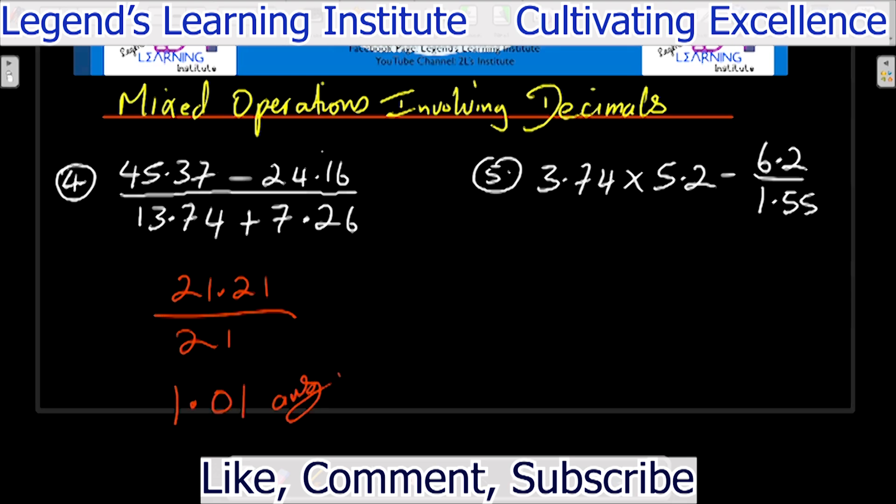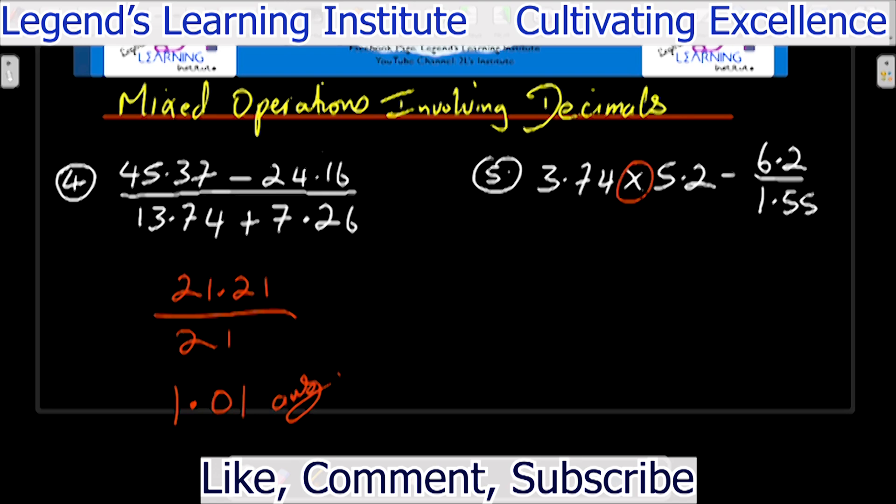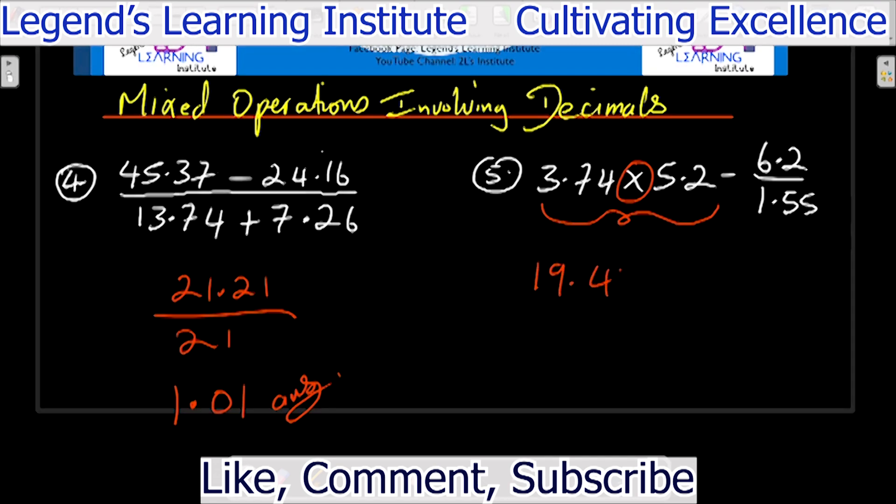Number 5 we have 3.74 times 5.2 subtract 6.2 over 1.55. Let's do the multiplication first because it comes first from left to right. So we say 3.74 times 5.2. That's 19.448.